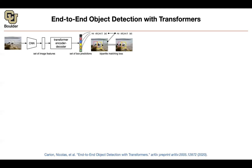The transformer encoder-decoder is going to help us predict a set. We want to reframe the object detection task as a set prediction task. Transformers are really good at that because they are going to take a set as input and output another set. But if you treat this problem as a set prediction task, then you are not going to know which box should you match with the corresponding ground truth.